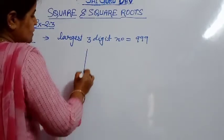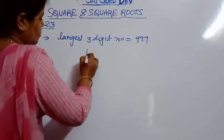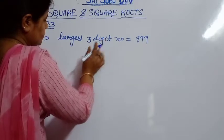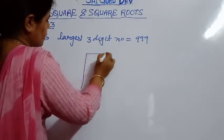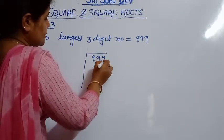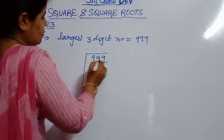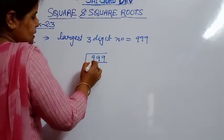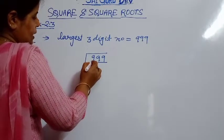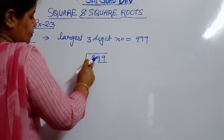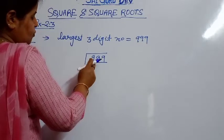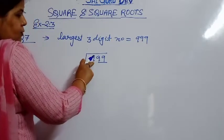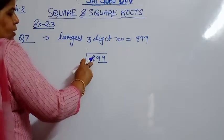What we will do? Just see here on the board. Write 999 and start making pairing from the right side. Here only this 9 is remained on the left side. So what you will do? Find the square number which will be nearest to 9.